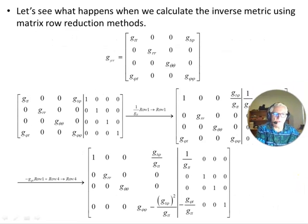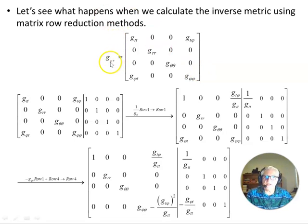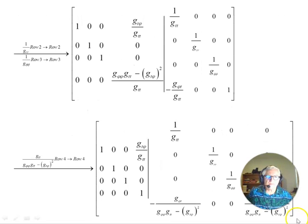Here's our metric with indices lowered. We're going to use the row reduction method. This is all from the 10th video in this series, so I'm only going to run through it briefly. First, we want to reduce the leading element to one by dividing through by g_tt, then pivot on that to eliminate terms in other rows. The next row down: we multiply minus g_phi_t by row one and add to row four to get a new row four. Then we reduce the leading term to unity and pivot on that leading entry.